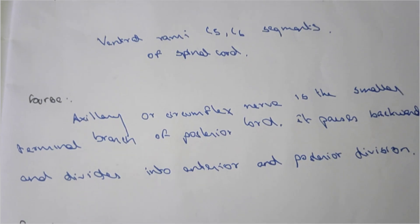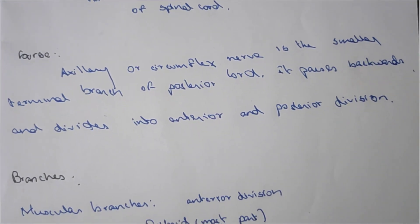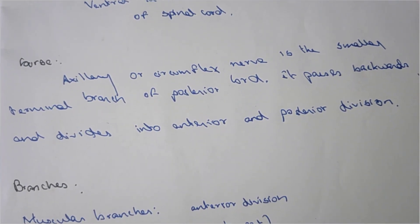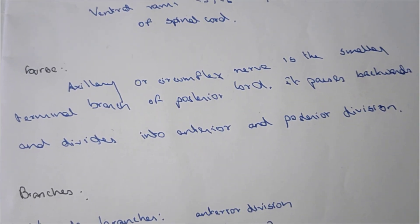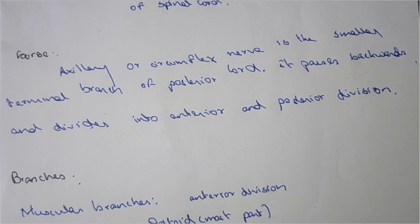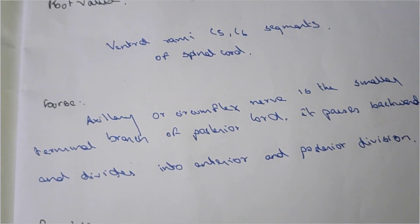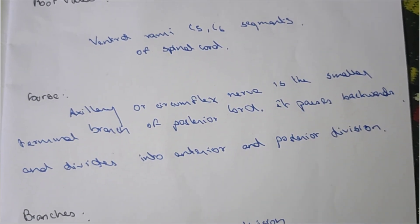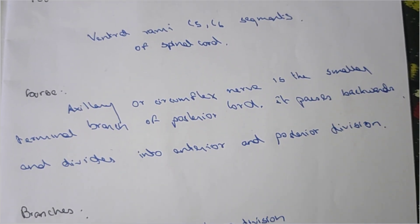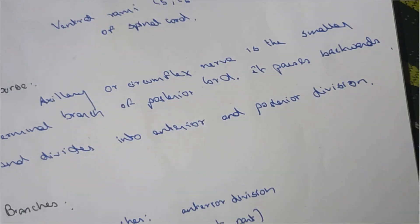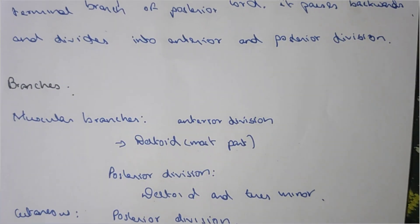The root value of the axillary nerve is the ventral rami of C5 and C6 segments of the spinal cord. The axillary or circumflex nerve is the smaller terminal branch of the posterior cord. It passes backward and divides into anterior as well as the posterior division.